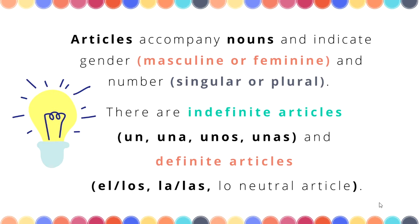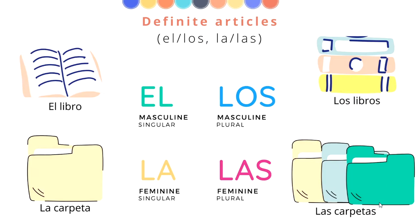Articles accompany nouns and indicate gender — masculine or feminine — and number — singular or plural. There are indefinite articles: un, una, unos, unas. And definite articles: el, los, la, las. Lo is a neutral article, which we will see in detail in future lessons.